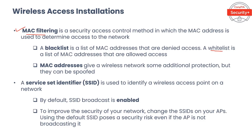A blacklist is a list of MAC addresses that are denied; a whitelist is a list of MAC addresses that are allowed access. MAC addresses give a wireless network some additional protection, but they can be spoofed — an attacker can capture details about a MAC address from the network and pretend to be that device. MAC filtering can be circumvented using tools such as Airodump-ng or the Aircrack-ng suite to scan for valid MAC addresses and then spoofing one's own MAC address into a validated one.